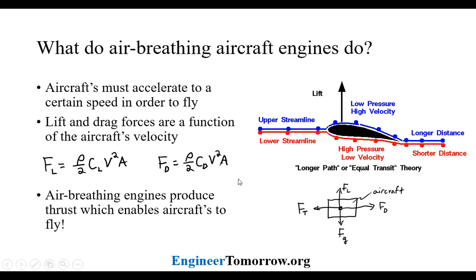Here I just wanted to show you a free body diagram of the aircraft, just to highlight the major forces. We have the lift force, which is a function of these parameters, and so is the drag, which is going against the direction of the aircraft traveling — in this case, the aircraft is traveling to the left. We have the thrust force, which counteracts the effects of the drag force, and the gravitational force, which has to be overcome by the lift force. To summarize, the air breathing engine produces thrust, which enables the aircraft to fly, and that's the main purpose of these air breathing engines.